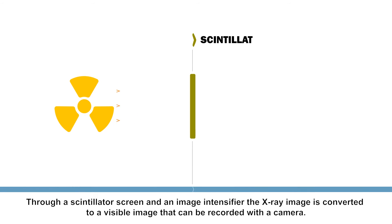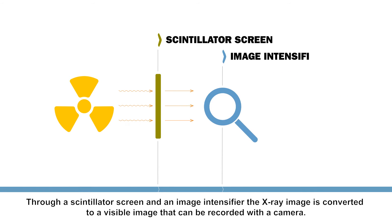Through a scintillator screen and an image intensifier, the x-ray image is converted to a visible image that can be recorded with the camera.